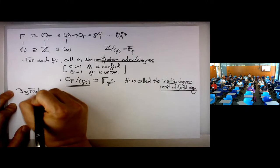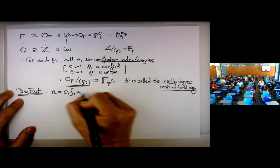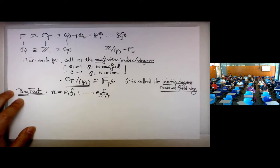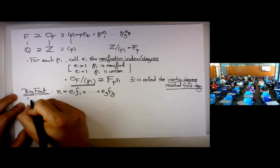Here's a big and very useful fact: N should equal the sum of the products of the ramification degrees and the inertia degrees, i.e., N = Σ Ei · Fi.